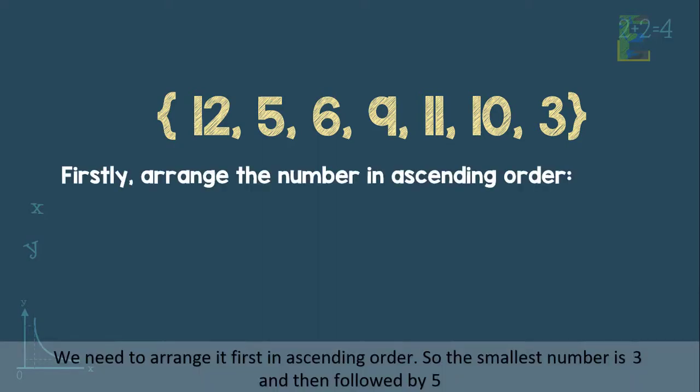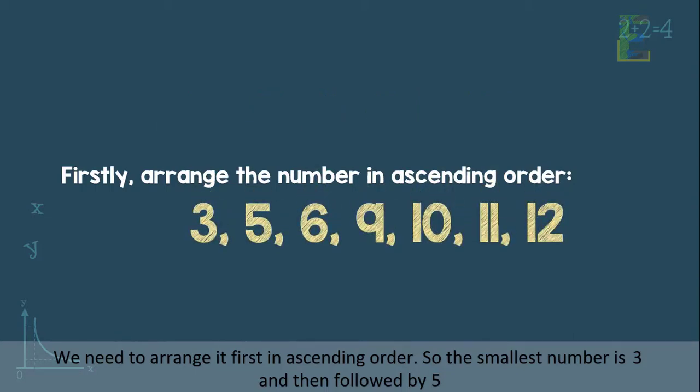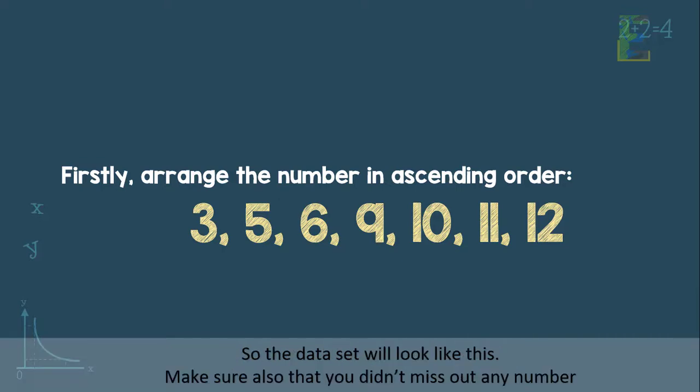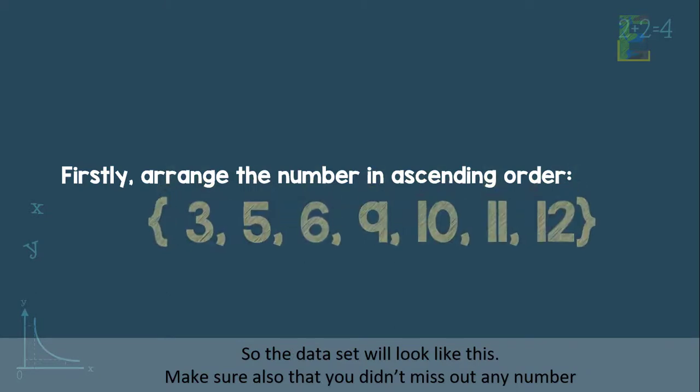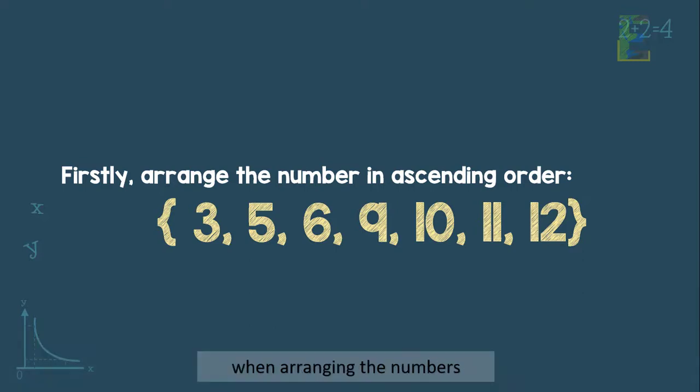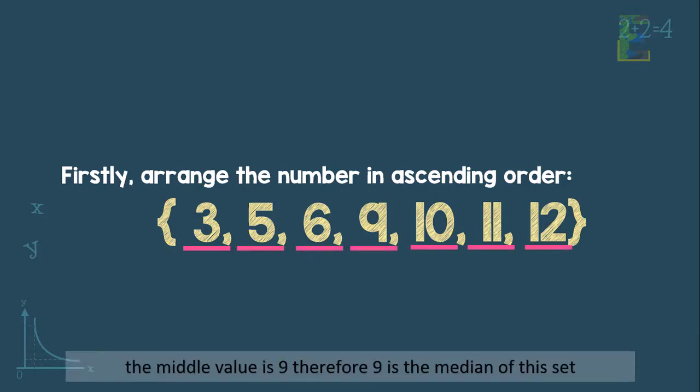We need to arrange it first in ascending order. So the smallest number is 3, and then followed by 5, and then 6, 9, 10, 11, and the greatest number is 12. So the data set will look like this. Make sure also that you didn't miss out any number when arranging the numbers. As we can see, there are 7 values in this data set, and the middle value is 9. Therefore, 9 is the median of this set.